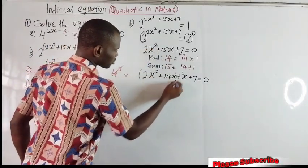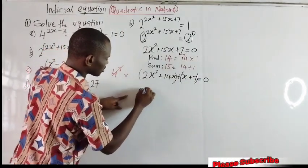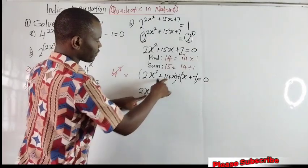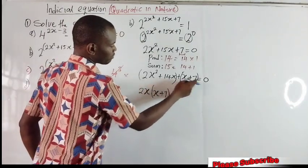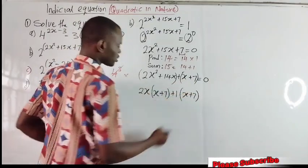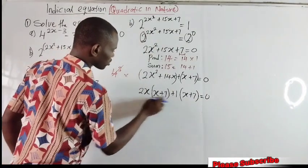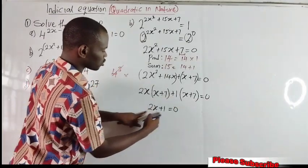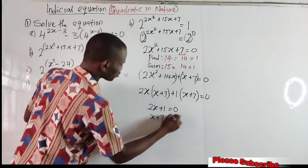We group 2 by 2 and factorize. 2x is common in the first group: 2x divides 2x squared giving x, and 2x divides 14x giving 7. Then 1 comes out as coefficient for the second group, giving x plus 7. This bracket and this bracket must be the same. So we group the ones outside: 2x plus 1 equal to 0, and x plus 7 equal to 0.